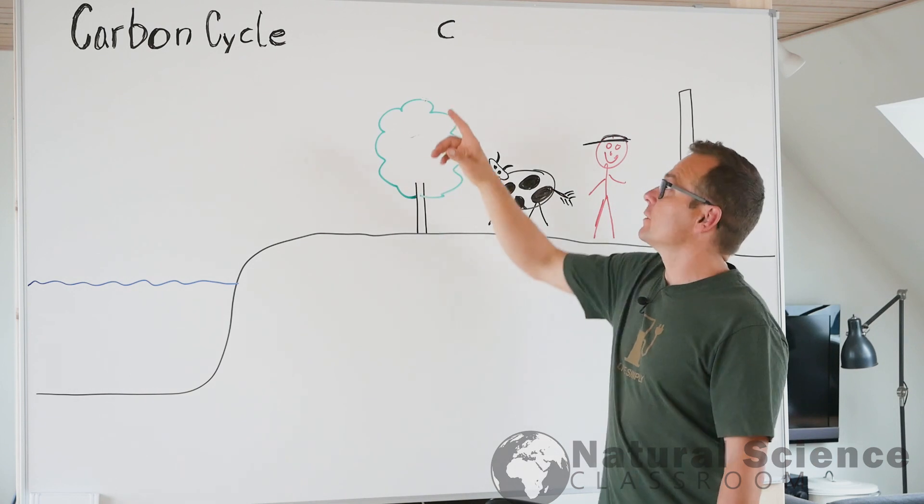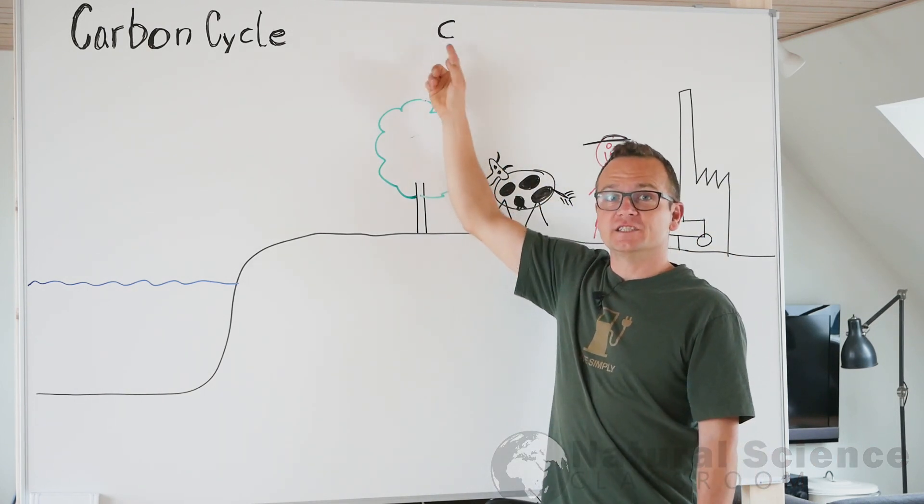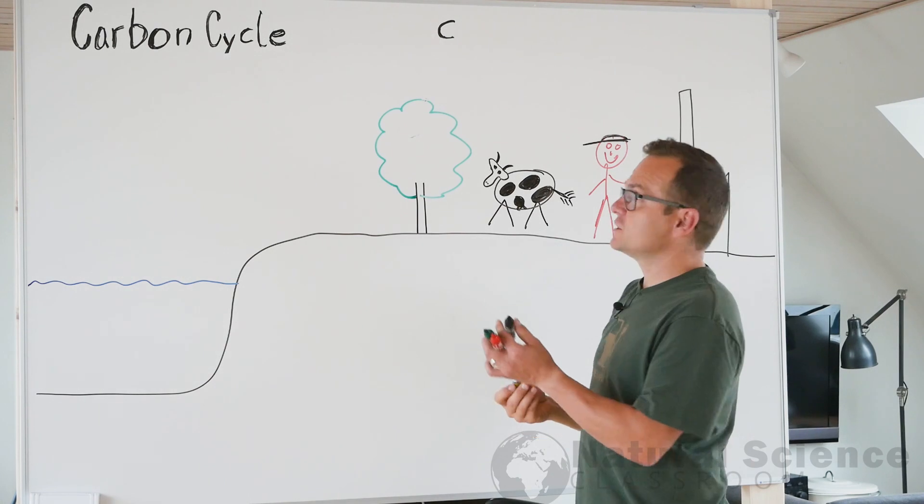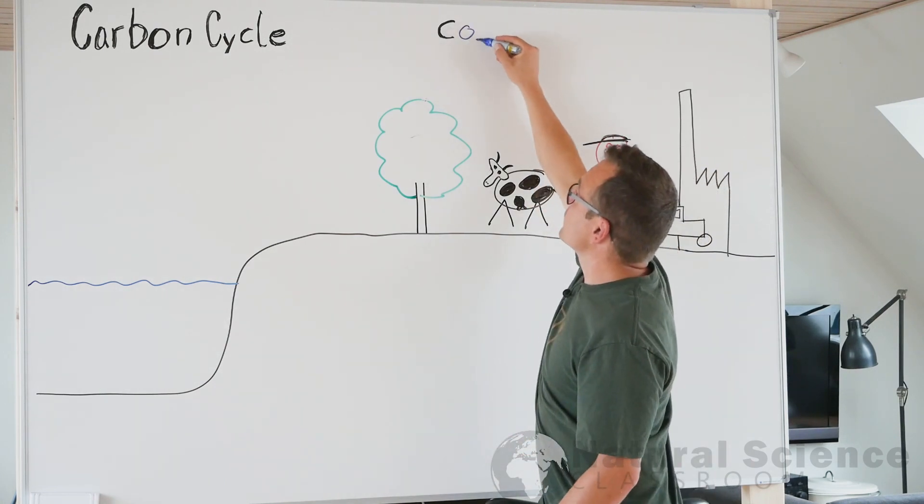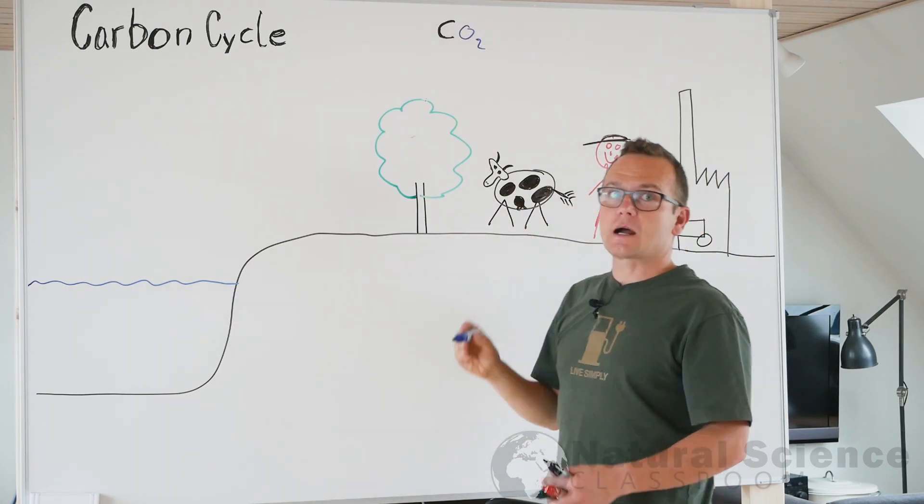Carbon is the element from the periodic table and it has the letter C. Together with oxygen, two of them, it forms CO2 or carbon dioxide.